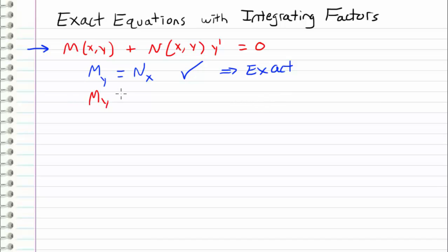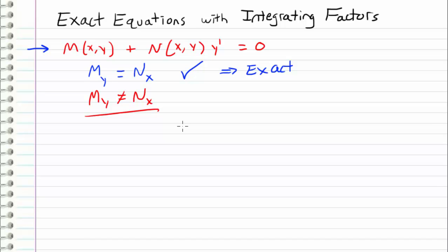However, what if M_y is not equal to N_x? Then our differential equation would not be exact. But we can make use of a strategy in order to turn this differential equation into an exact equation if M_y does not equal N_x, and the way we're going to do that is by using our old friend, the integrating factor.